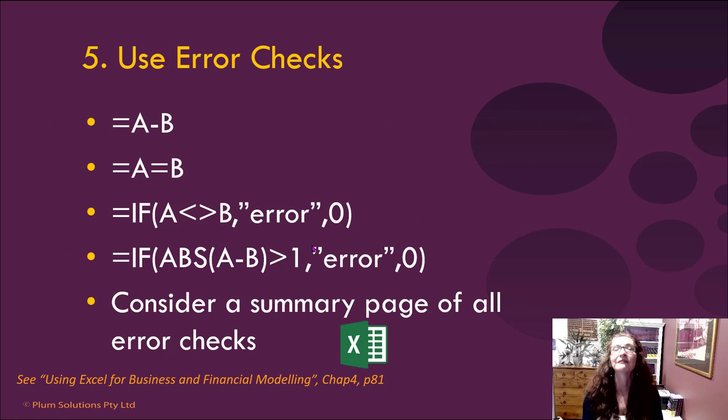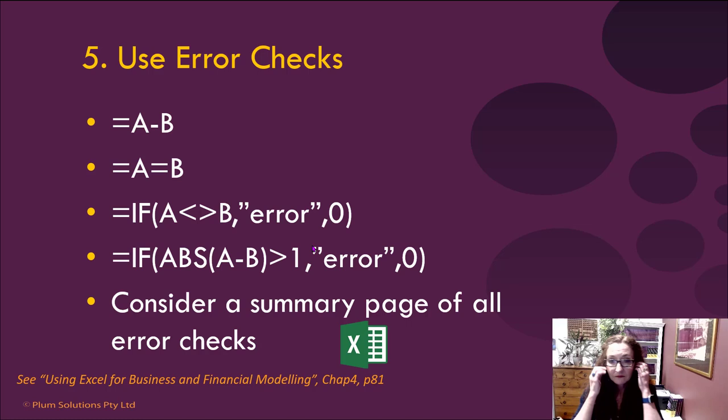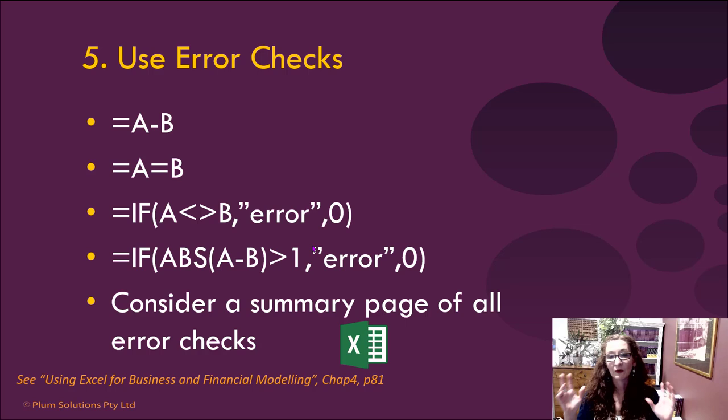Next is number five — error checks. Error checks are the fifth point of financial modeling best practice. Here are some examples: the equals-equals check is a nice one, we've looked at stopping truncation and allowing a tolerance for error, and we've talked about creating a summary page of all those error checks.